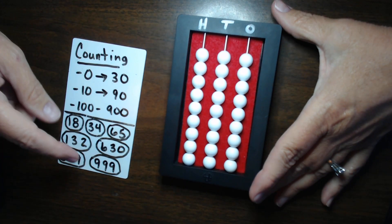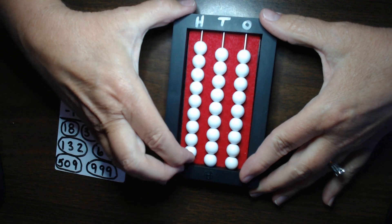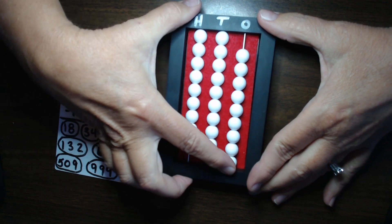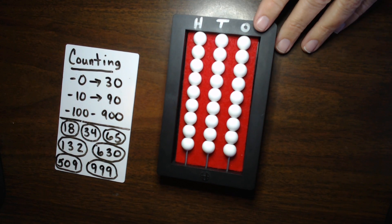And last but not least, I told you this does go from 0 to 999. So, we will set 999. So, with all the beads up, that reads 999. And that is it for the abacus. That wraps it up for this video.